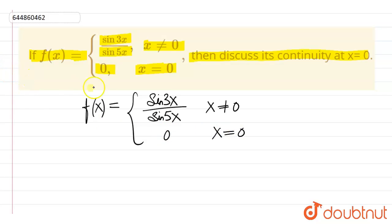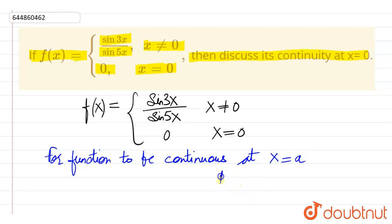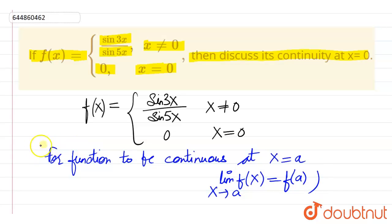So we need to discuss the continuity of this function at x equal to 0. For a function to be continuous at any point x equal to a, the limiting value as x approaches a of f of x should be equal to f of a. If this condition is satisfied, then the function is said to be continuous.